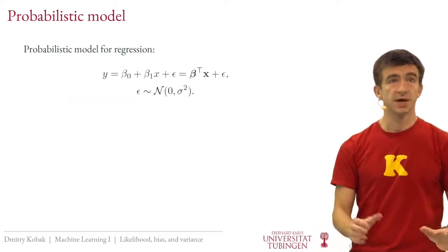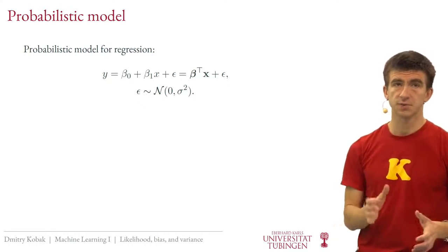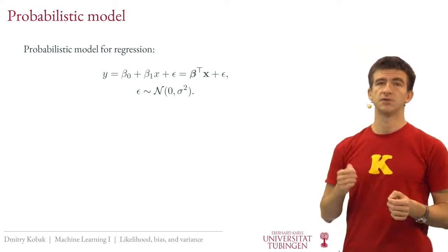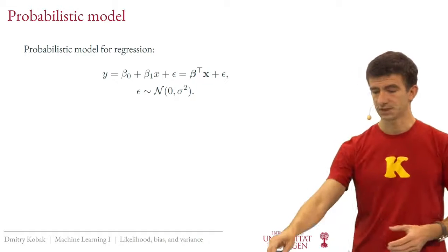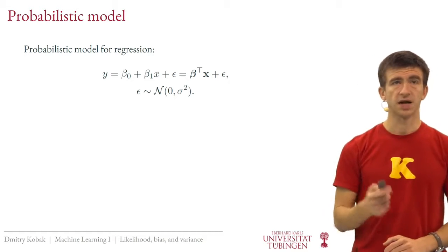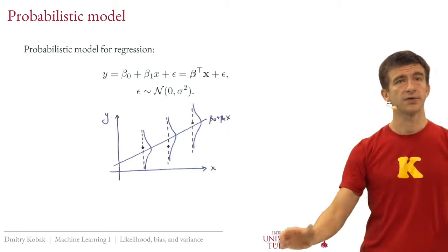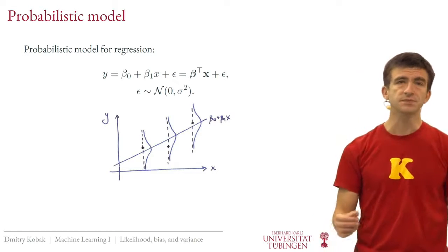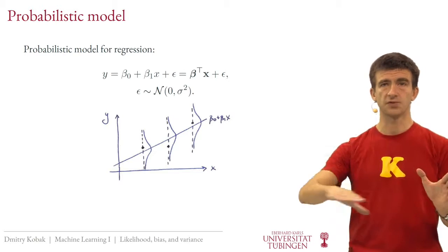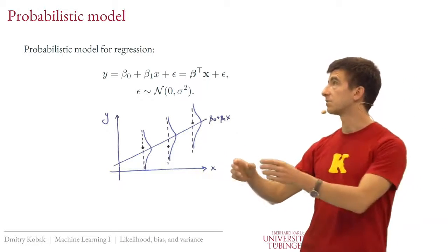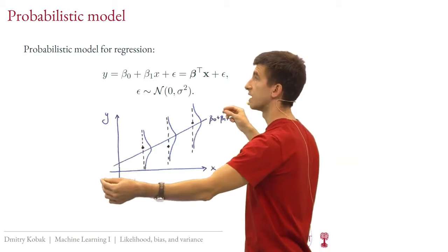Now we can get back to the probabilistic model for linear regression. Epsilon is a random variable from a Gaussian distribution with mean zero and fixed variance sigma squared. For the simple case with one variable x, there is some true beta defining a regression line relating y to x. When generating values from this generative model, for any x, the value is the linear prediction plus noise from a Gaussian distribution, so it could end up slightly above or below the line.